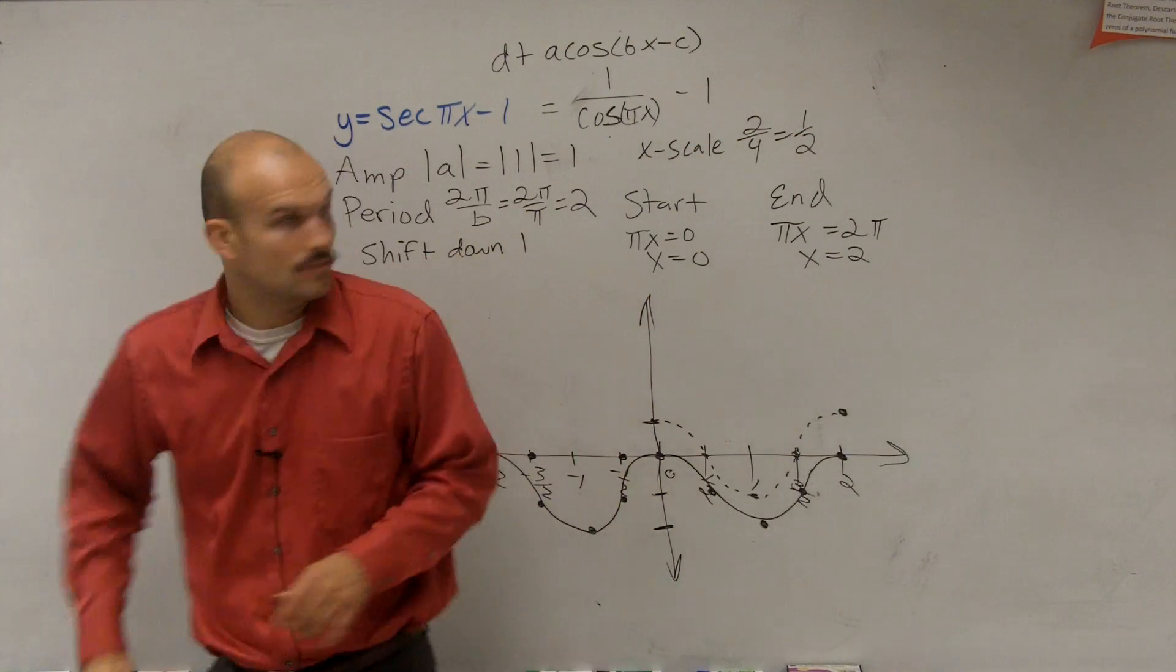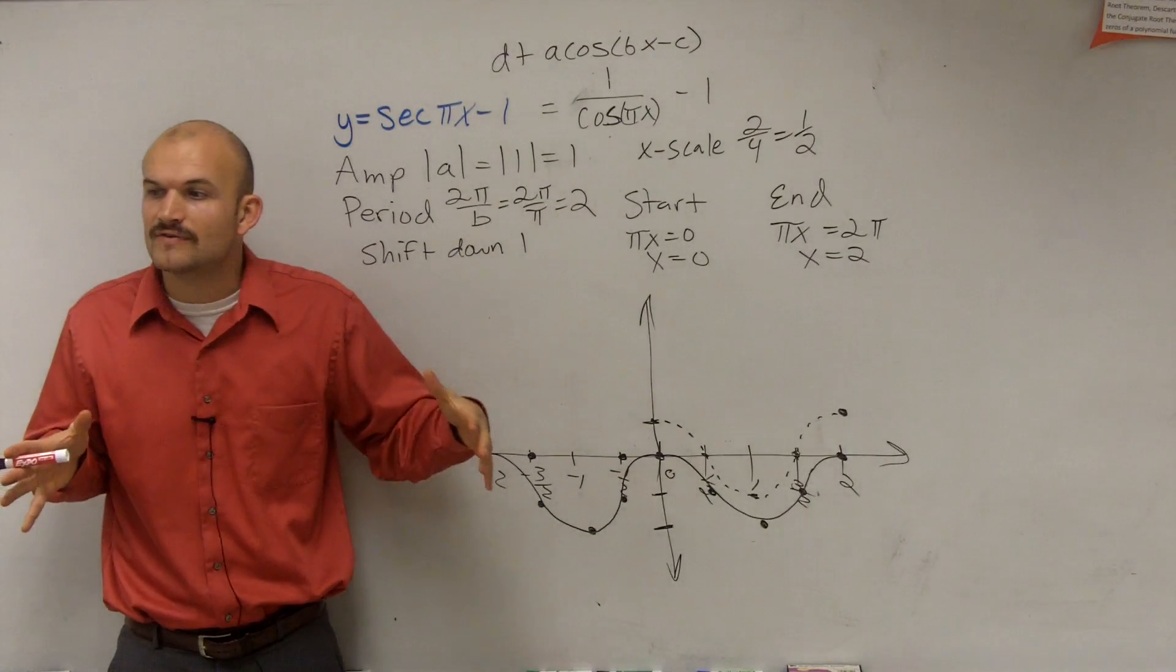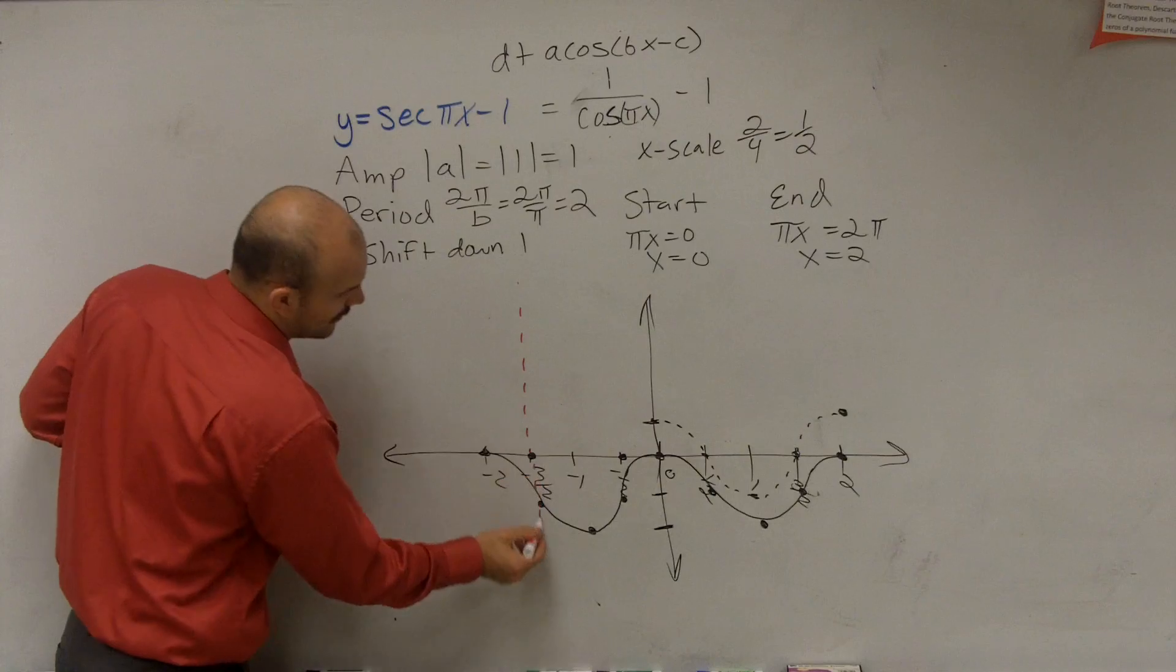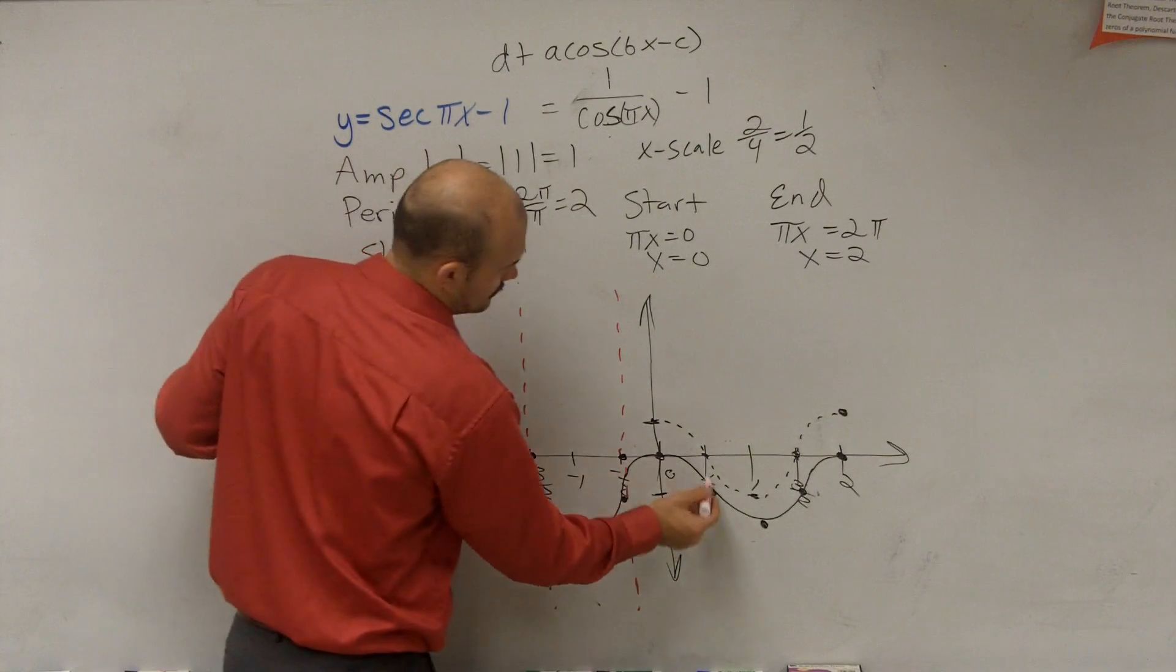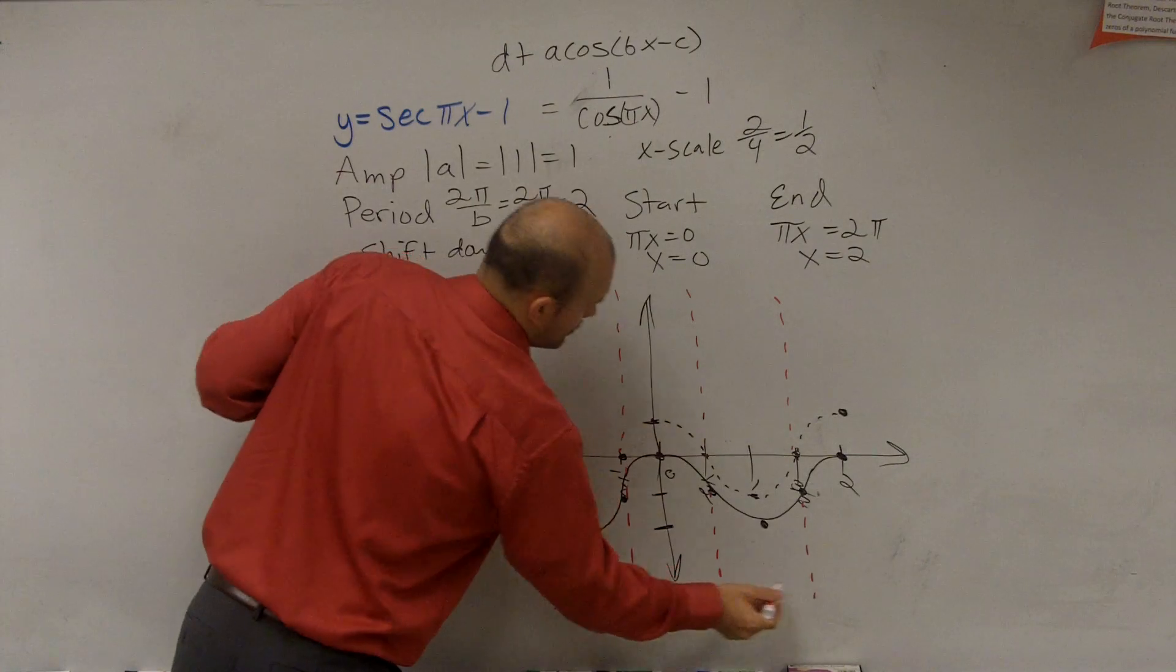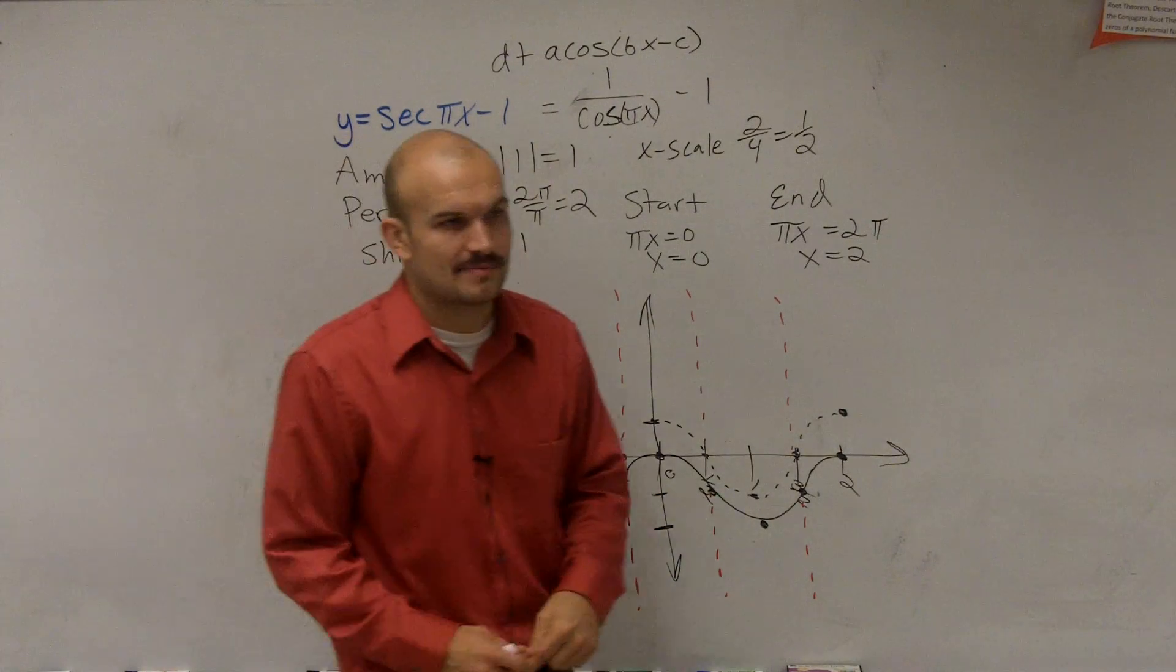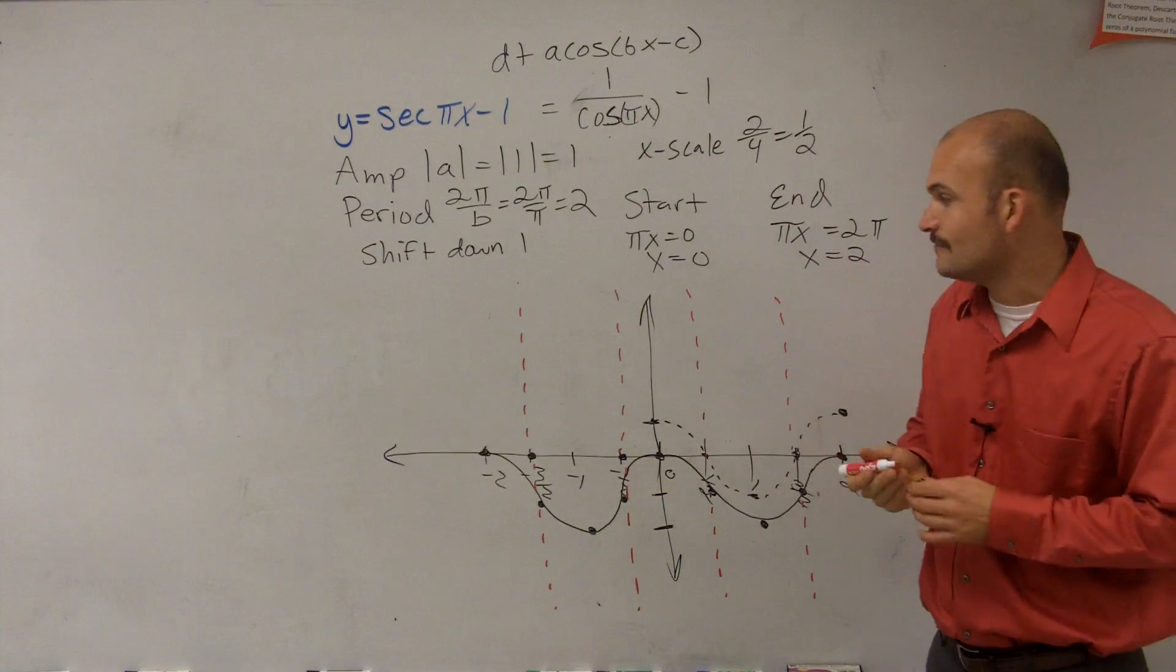So in graphing the secant function, the reciprocal function, what you're going to do is you're going to take all of the intercepts. All of the intercepts are when your secant function is undefined. So what we're going to do is create vertical asymptotes. We're not really going to create them. That's where they are. So if you were to shift that graph back up, you can see that each one of these asymptotes is where we would have an intercept, meaning my cosine function would be equal to 0. So therefore, they'd be undefined. So I'm going to create a vertical asymptote.